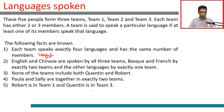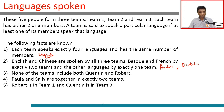English and Chinese are spoken by all 3 teams. Basque and French are spoken by exactly 2 teams. Arabic, Basque, C, and Dutch are spoken by exactly 1 team. None of the teams include both Quentin and Robert. Paula and Sally are together in exactly 2 teams. Robert is in team 1 and Quentin is in team 3.